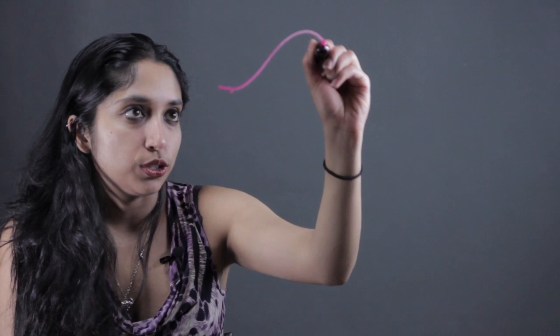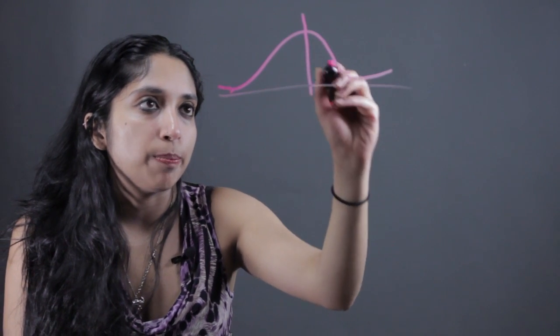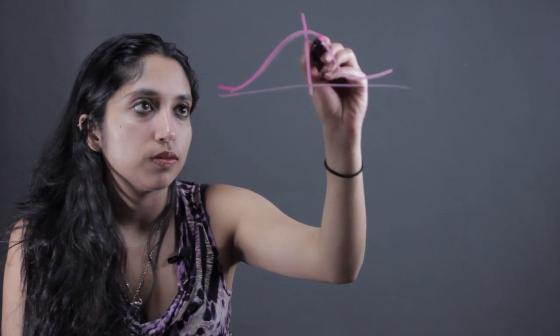So a bell curve is just another name for a normal distribution which I'm drawing for you right here. You get that name because it has a bell-like shape, as you can see.